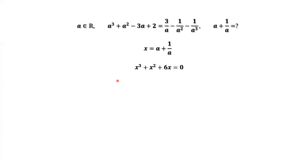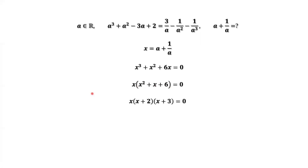Now we solve this equation. How? We factor it. Continuing to factor the second part, we find three solutions for x: x equals 0, x equals negative 2, and x equals negative 3.